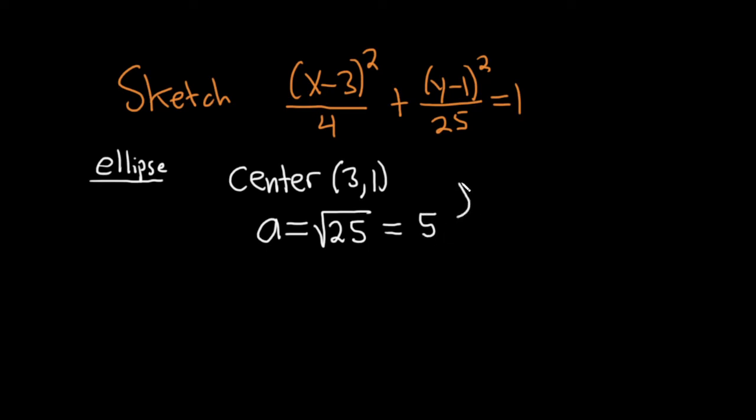You want the positive square root. So a is 5. And then b is the square root of the other one. So in this case, b is the square root of 4, which is just 2.